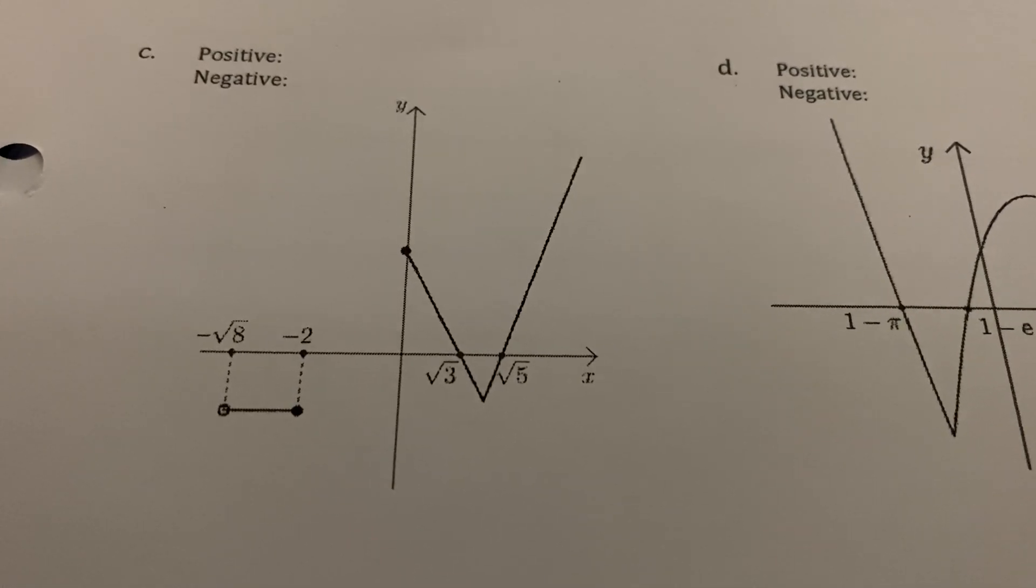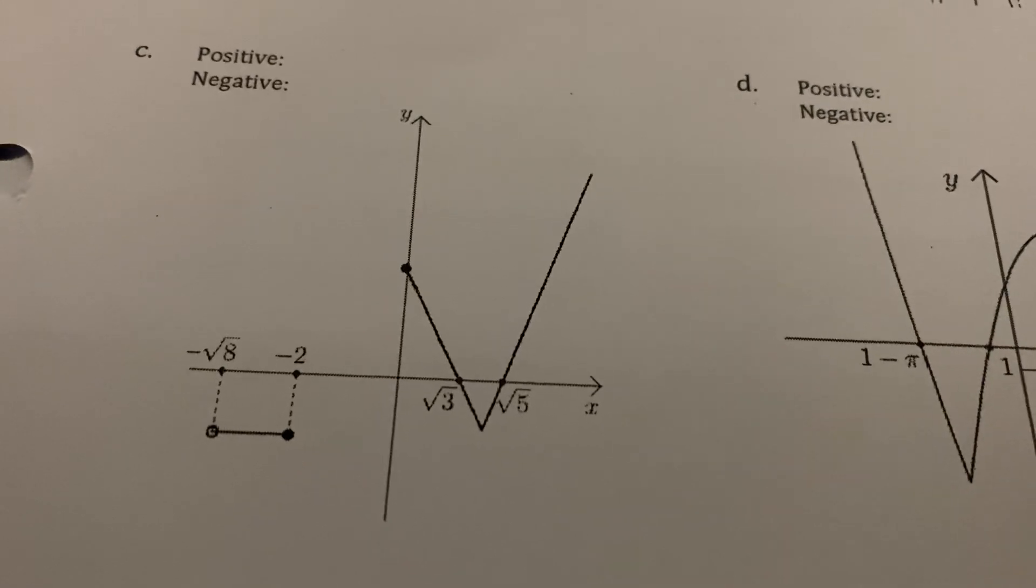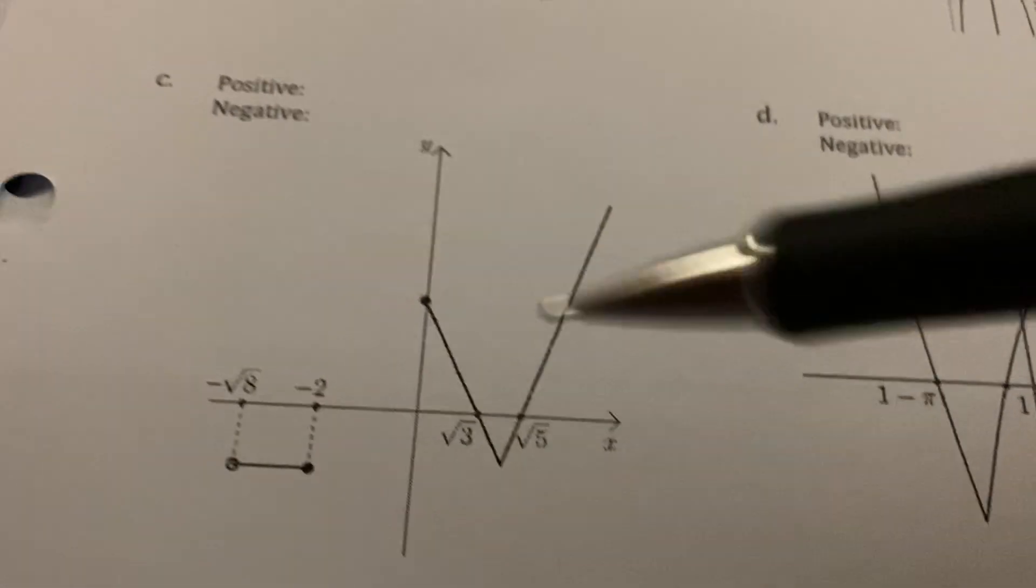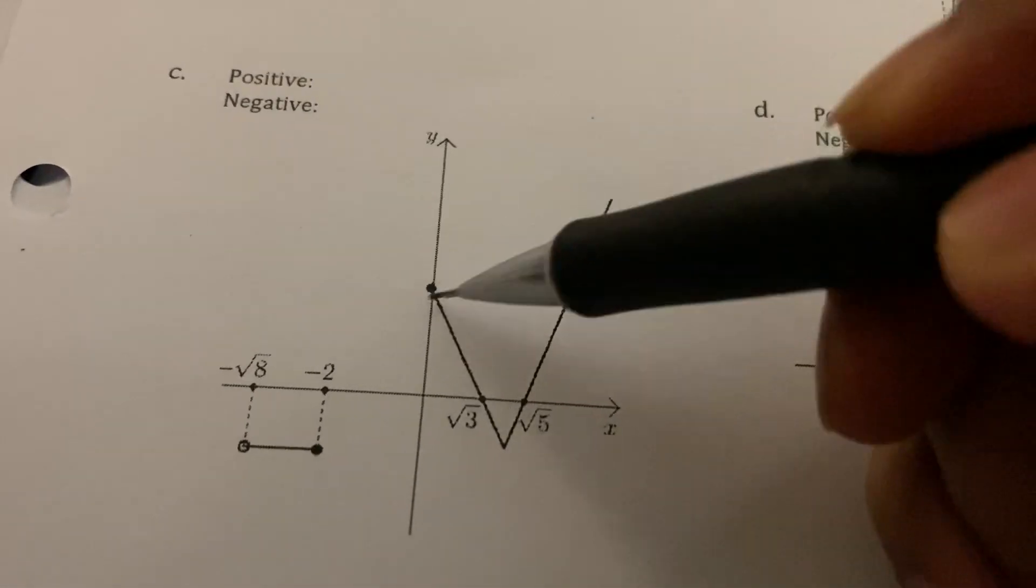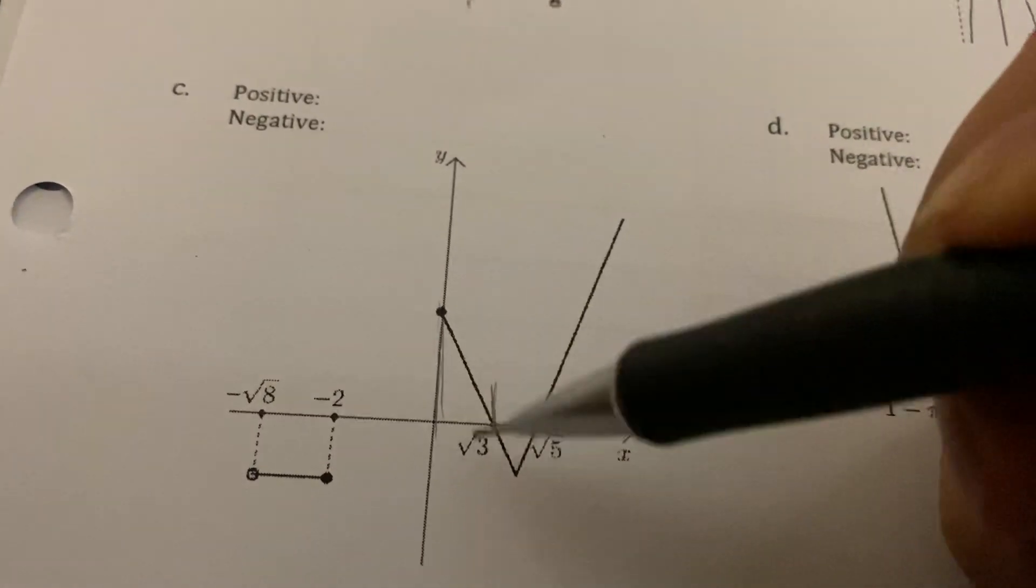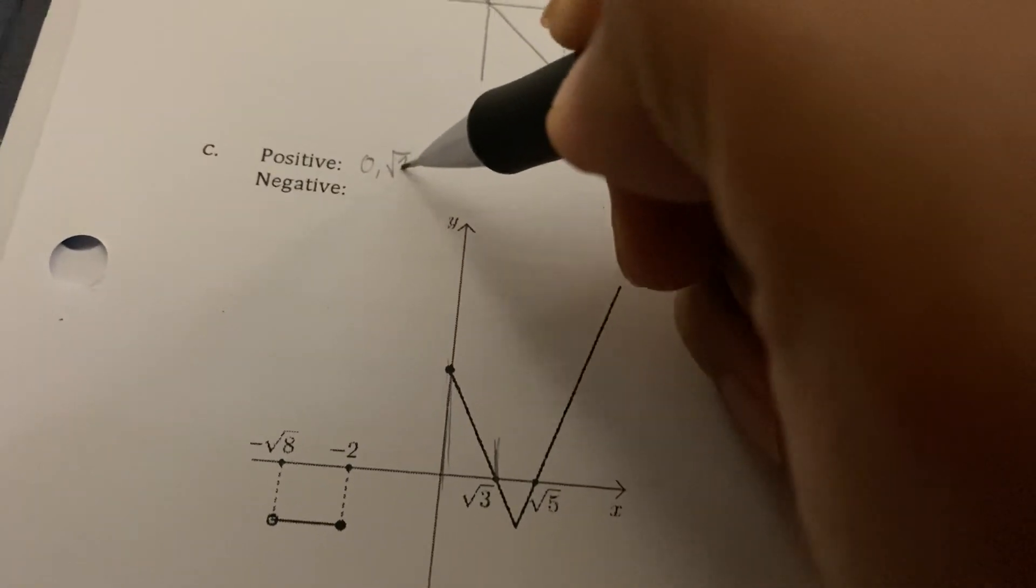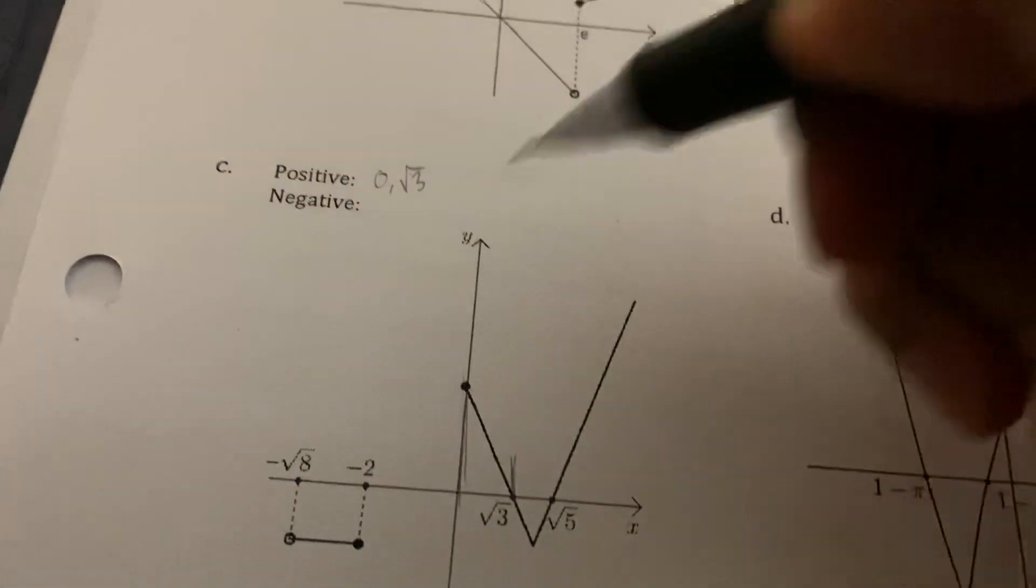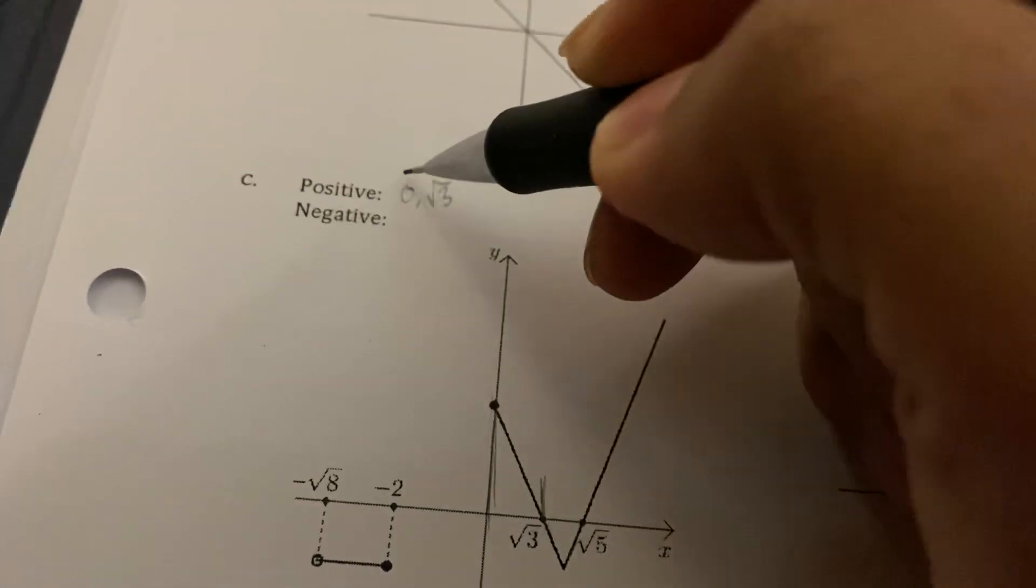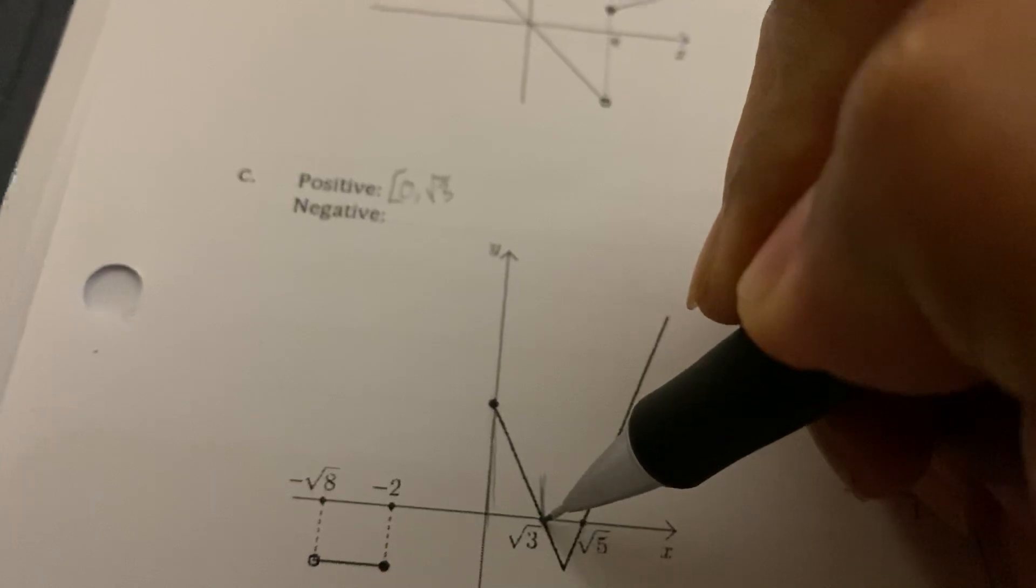Okay, for 1c we're looking for the intervals where it's positive first, so that would be where it's above the x-axis. This one has two: from here to here it's above the x-axis, so from zero to square root of three.